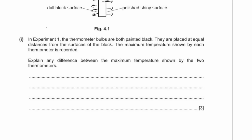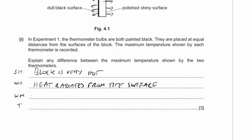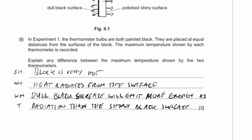Using the structured approach — something happens, which has an effect, which means, therefore: the block is very hot; heat radiates from the surface; the dull black surface emits more radiation than the shiny black surface; therefore the thermometer on the dull black surface side will show a higher temperature than the one on the shiny black surface side.